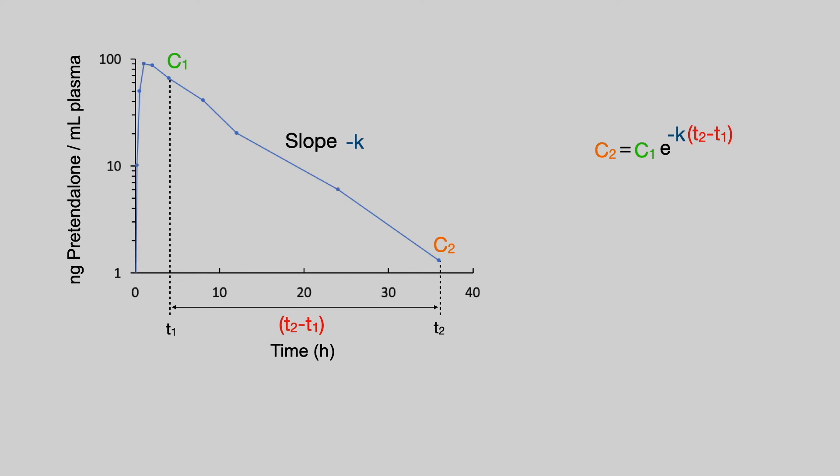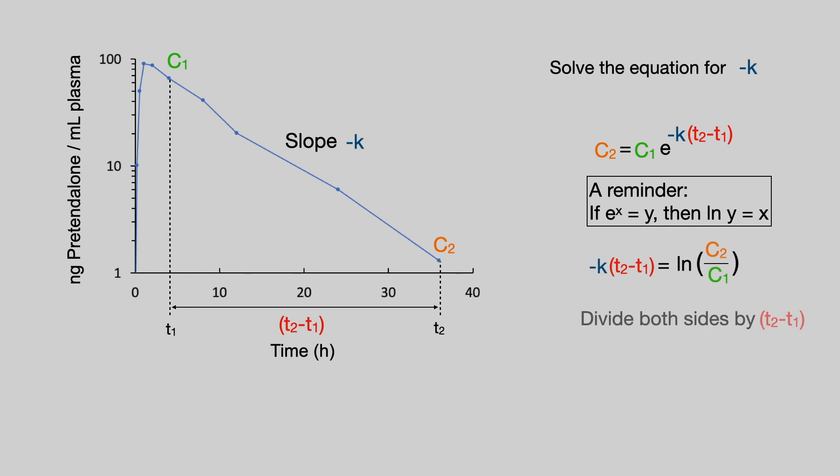What we need from this equation, of course, is the slope of the line minus K. So we have to solve the equation for minus K. I'm not going to go through this step by step. I'm just showing it here and you end up with minus K equals the natural log of C2 divided by C1 all divided by that time difference.